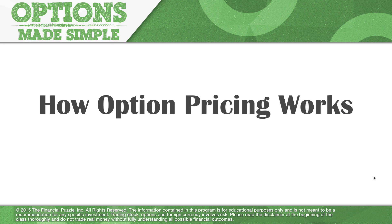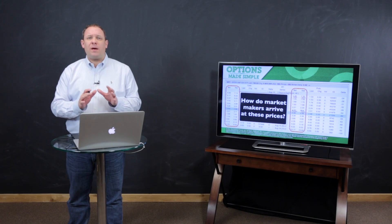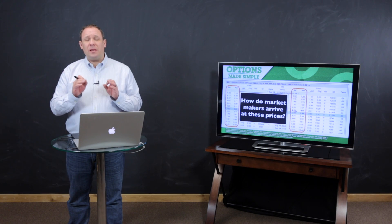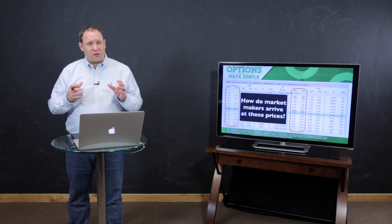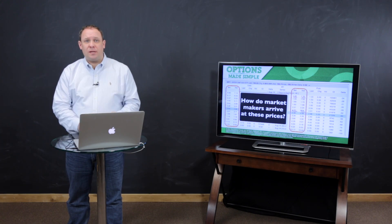As we look at the option price, you come into an options chain and you might look at these prices and wonder how we come to these conclusions of what an option should be worth. For example, if you look at this chain, you see quotes of $1.32 by $1.35, $2.53 by $2.58. Who decides? What are these numbers actually worth? When we think about option pricing, there are a lot of different moving components that determine this price.